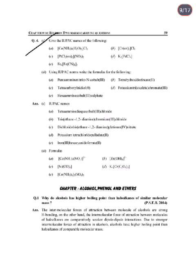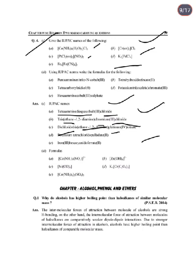IUPAC naming examples: (1) [Co(NH₃)₄(H₂O)₂]Cl₃ — Tetraaminediaquacobalt(III) chloride. (2) [Cr(en)₃]Cl₃ — Tris(ethane-1,2-diamine)chromium(III) chloride. (3) [PtCl₂(en)] — Dichloridobis(ethane-1,2-diamine)platinum(IV) nitrate. (4) K₂[PdCl₄] — Potassium tetrachloridopalladate(II).